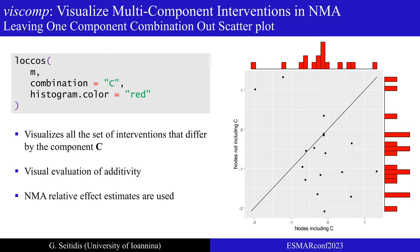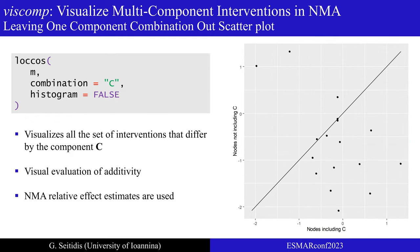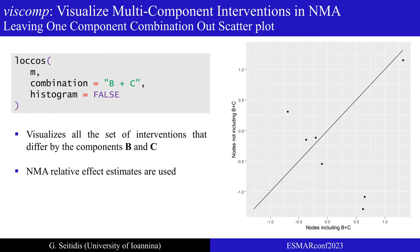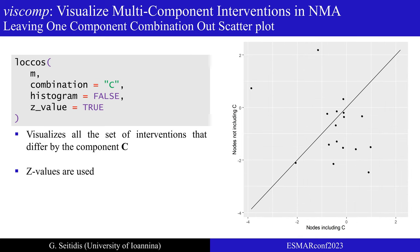By setting the argument histogram equal to false, histograms are not displayed. The function can be easily extended to component combinations through the argument combination. For example, if we are interested in the combination between components B and C, we can visualize the set of interventions that differ by these components by setting the argument combination equal to B+C. It should be noted that the spacing among components does not affect the result of VISCOM. Lastly, we can use z-values instead of relative effects by setting the argument z_value equal to true.